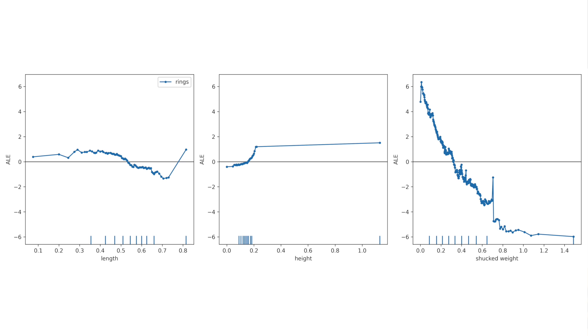There are some conclusions we can make from the plot. The effect of length and height on the predicted number of rings is lower when compared to shuck weight. The downward sloping line for shuck weight indicates that the predicted number of rings tends to decrease as shuck weight increases.